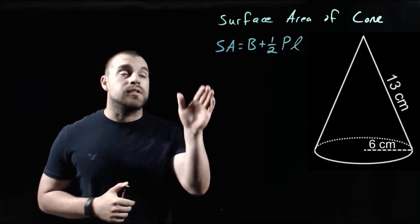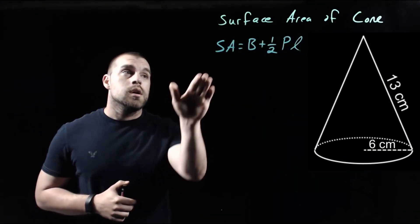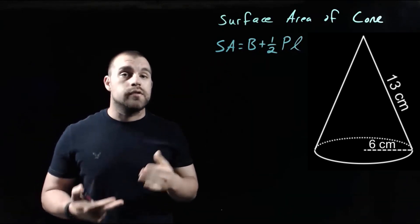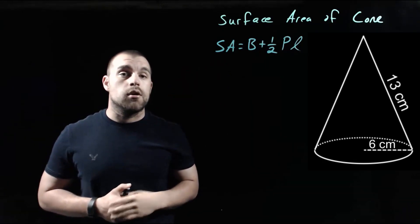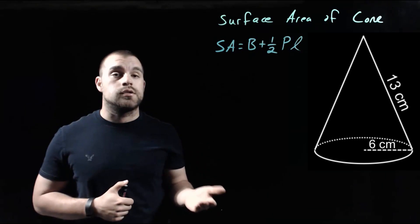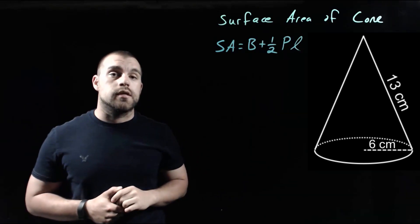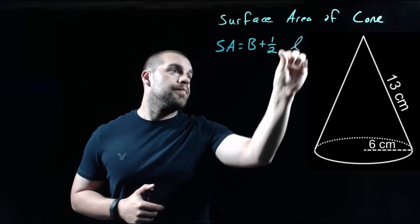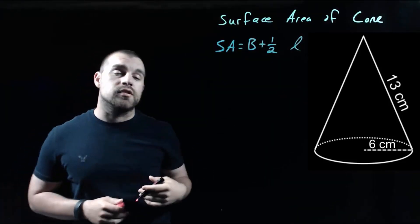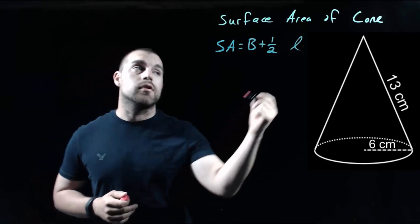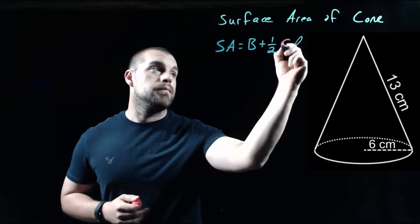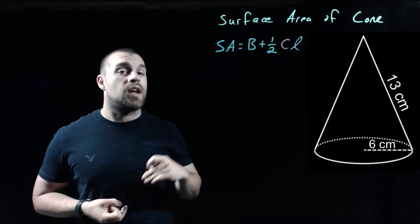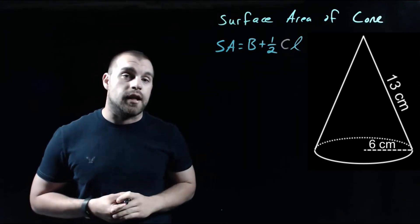The last thing we're going to talk about is finding the surface area of a cone. Cones are very similar to pyramids, except our base figures are circles. Circles don't really have perimeters — instead we talk about the circumference of a circle. So our surface area formula becomes: area of the base plus one half times the circumference times the slant height.